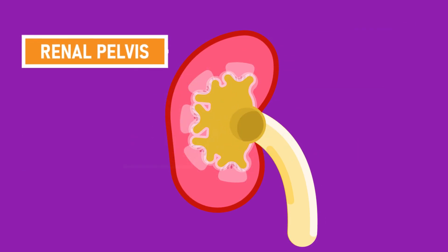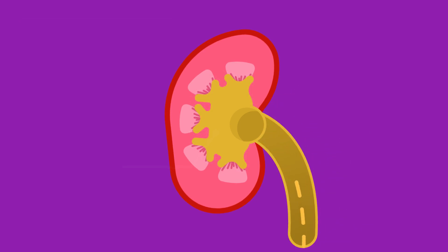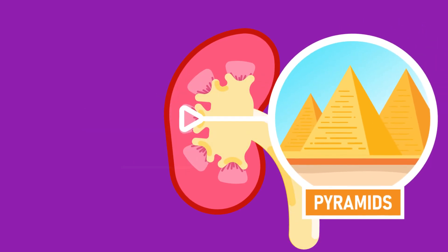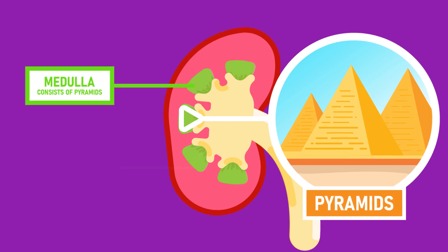At the top of the ureta, we will find a cavity called the pelvis. The pelvis collects urine and opens to an area called pyramids. The pyramids are cone-shaped areas in the medulla region of our kidney.